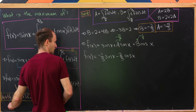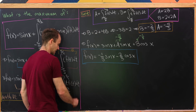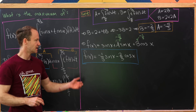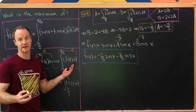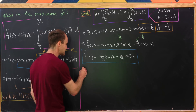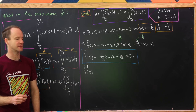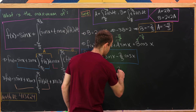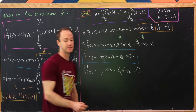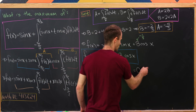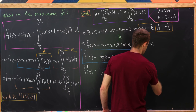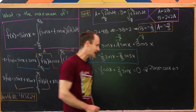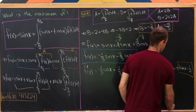After all that work, we've reduced our problem from something beyond a typical differential calculus class to a standard calculus problem. To find the maximum, we take the derivative: f′(x) = −(1/3)·cos(x) + (2/3)·sin(x), and set it equal to zero. That simplifies to 2·sin(x) = cos(x), which is the same as saying tangent of x equals 1/2.